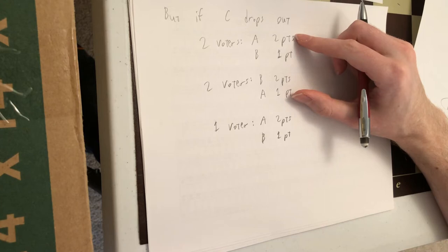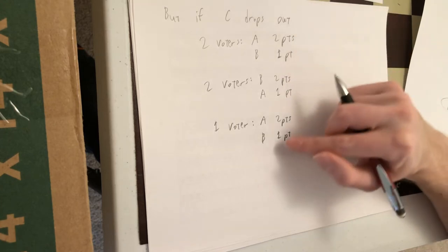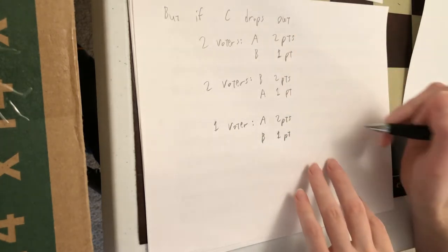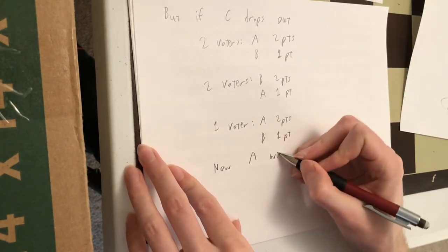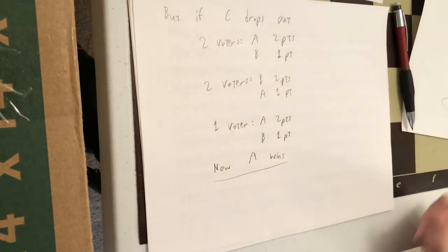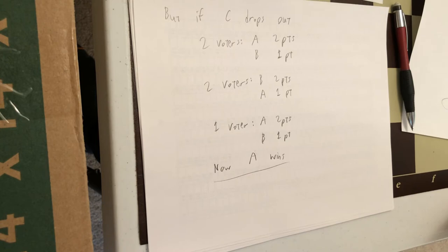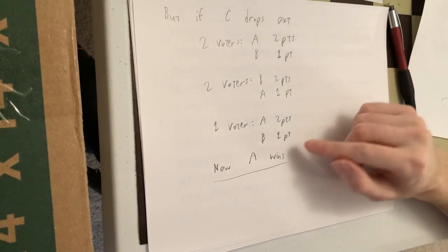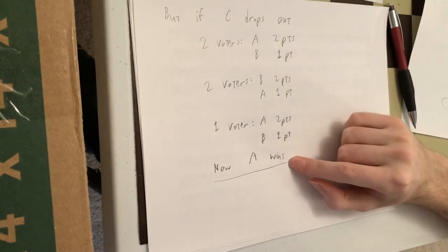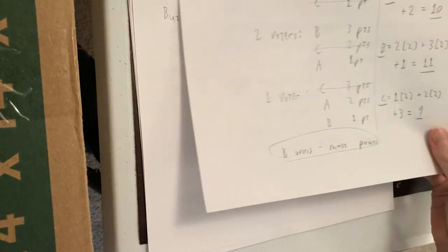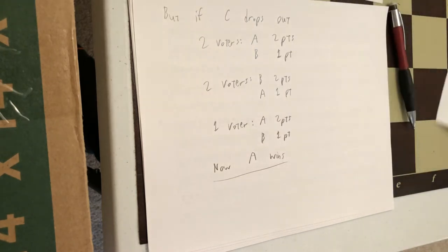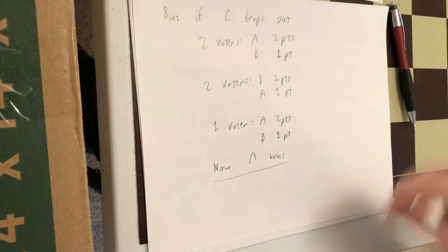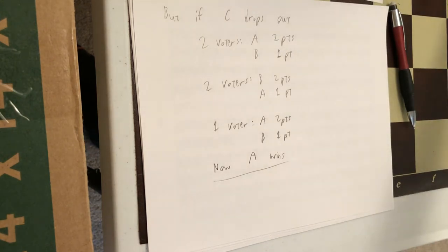Our last voter down here prefers C the most, but C has dropped out. So if it's just A and B, A is their favorite. And A gets two points and B gets one. So these two pairs of voters have opposite preferences. So they cancel out and this one's going to be decisive. So now A wins. So that's a violation of independence of irrelevant alternatives. If it's just A against B, A prevails. But if it's A, B, and C, then B is suddenly better than A. So that's not right. So the Borda count also has flaws.